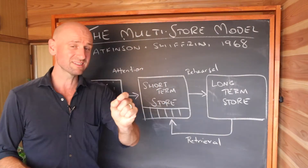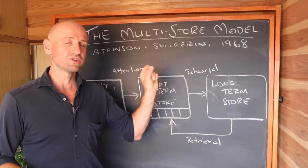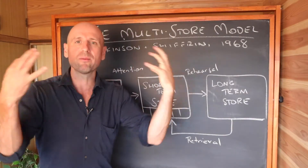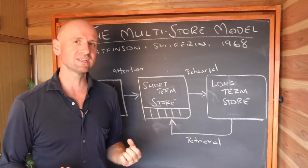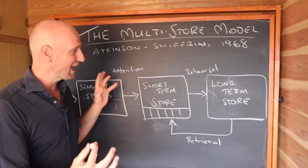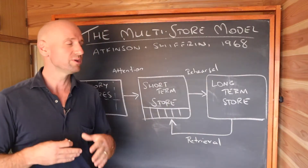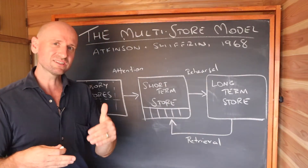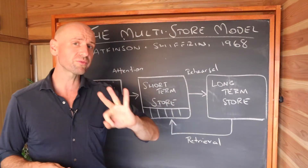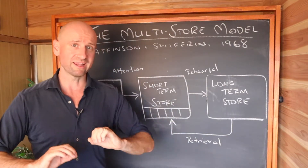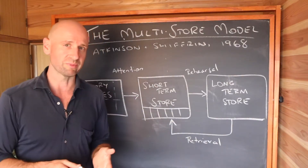The multi-store model wasn't entirely original in the sense that Atkinson and Shiffrin didn't come up with all these ideas themselves. They took a whole bunch of existing ideas that emerged from studies and combined them in their 110-page original framework. There are three main studies we can use to support the multi-store model: HM's case study, Glanzer and Cunitz's Primacy and Recency Effect, and Peterson and Peterson.